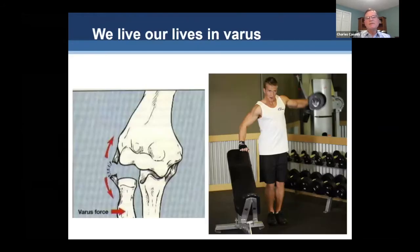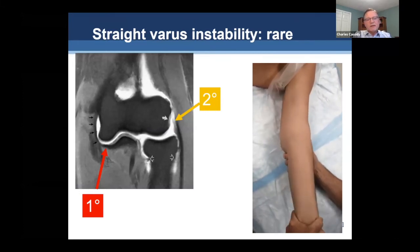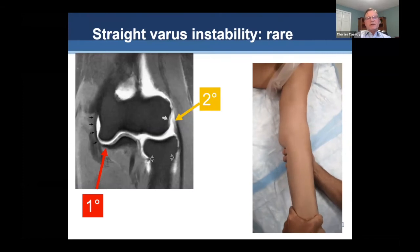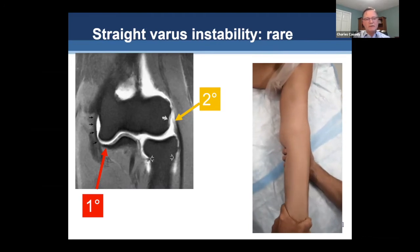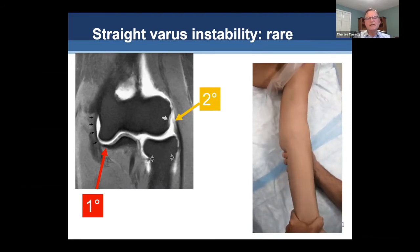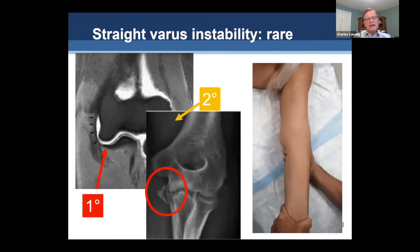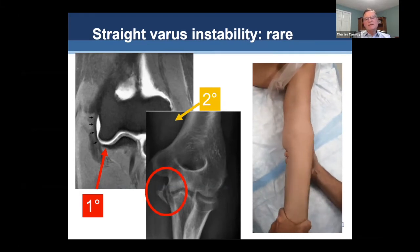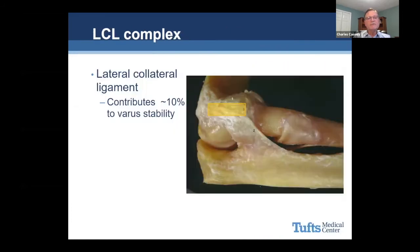Number two: we live our lives in varus. Straight varus instability is pretty rare. The primary restraint to varus is actually the articular surfaces — the medial edge of the coronoid and the medial crista of the trochlea. The secondary restraint is the ligament itself. It becomes critically important, however, with injuries such as a varus posteromedial injury. You can see that the support on the medial side of the coronoid has been lost, and that elbow is going to be really unstable — something you need to discuss with your therapist in terms of how best to rehab, which usually requires surgery.